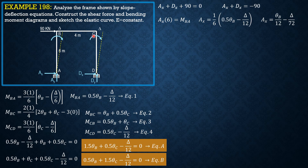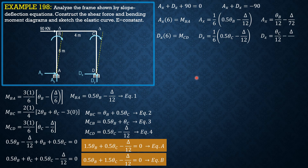Likewise, drawing the free body diagram for column CD and taking moments about C: DX times 6 equals MCD. Therefore DX equals (1/6) times (0.5 theta_C minus delta over 12), which gives DX equals theta_C over 12 minus delta over 72. Substituting into the sway equilibrium equation: theta_B over 12 minus delta over 72 plus theta_C over 12 minus delta over 72 equals negative 90.